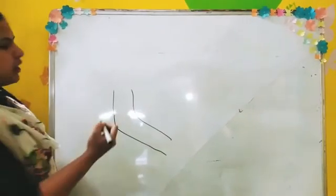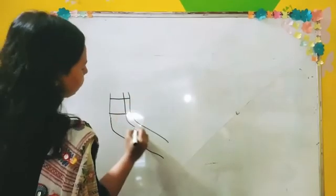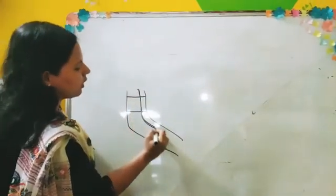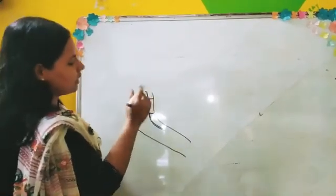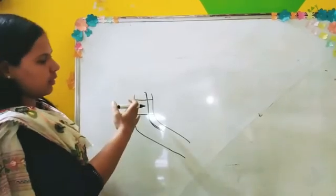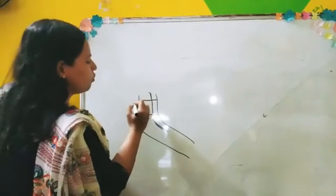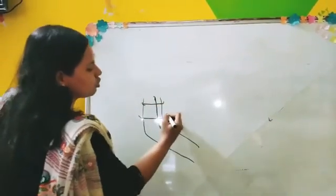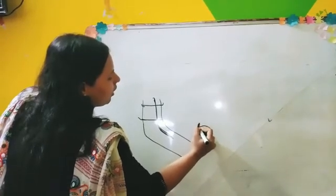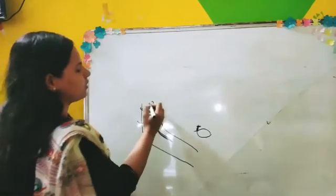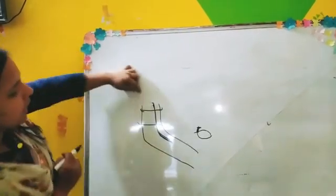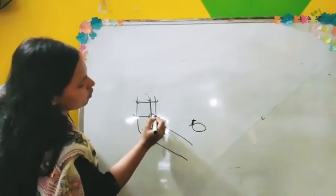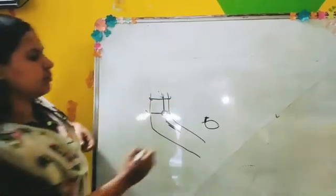To measure blood pressure, we will go to the left arm and block the brachial artery. This is our left arm — there are several arteries here. We can do this anywhere in the body, but we select the left arm because it is easy and the blood pressure is higher there. Using the cuff, we will block this artery. After blocking, we will slowly release the pressure from the bulb so that blood can flow, and we will record the blood pressure on our sphygmomanometer.